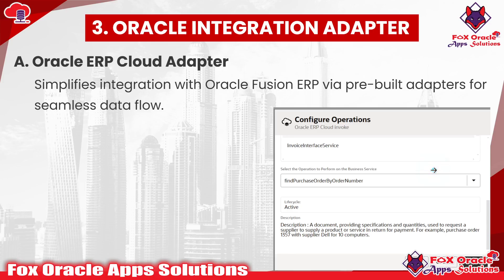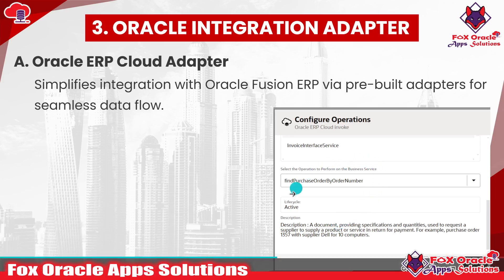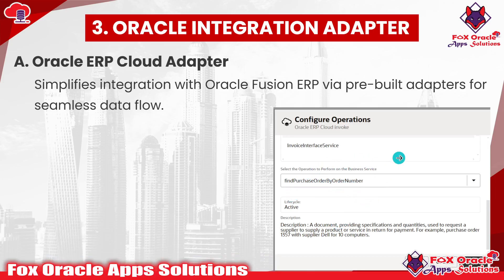Now coming to the next option — we have Oracle ERP Cloud Adapters. When we are working with integrations using Oracle Integration Cloud, it has predefined adapters known as Oracle ERP Cloud Adapters. These Oracle ERP Cloud Adapters have various operations and methods to interact with Oracle Fusion applications. Here you can see in the screenshot that with the help of the Oracle ERP Cloud Adapter, we can use the operation 'Find Purchase Order by Number' and get the purchase order data from Fusion applications.